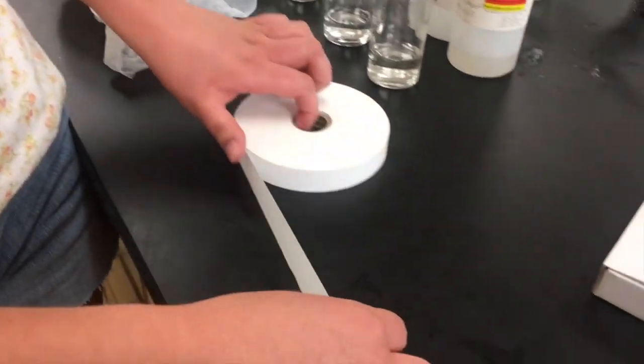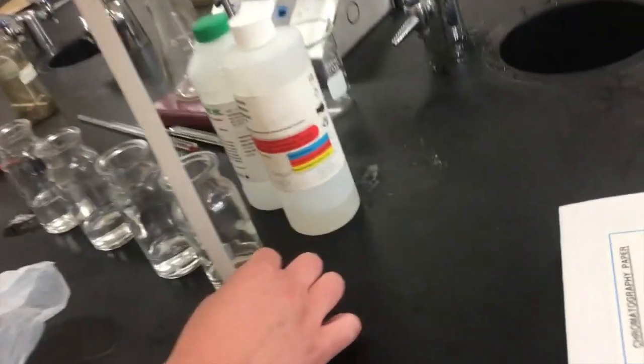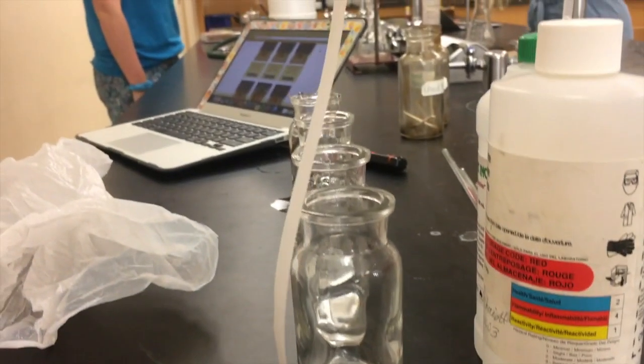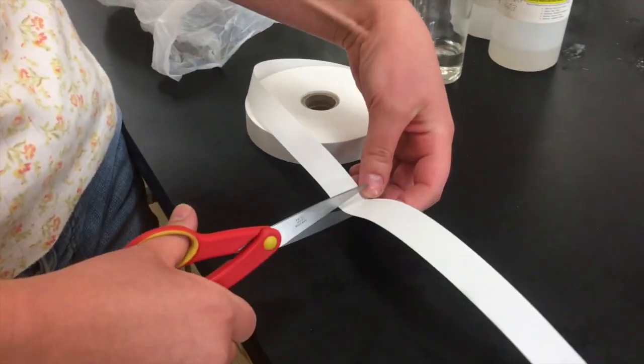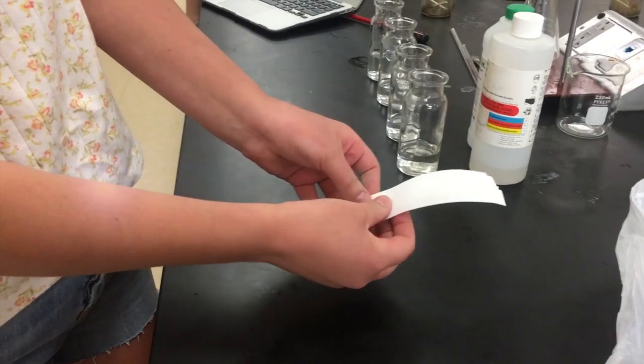So the length of the strips of chromatography paper should be a little bit longer than the height of the collection jar. So right about there looks to be good. And now we're just taking our scissors, we have safety scissors, and we're just cutting that off. Perfect.